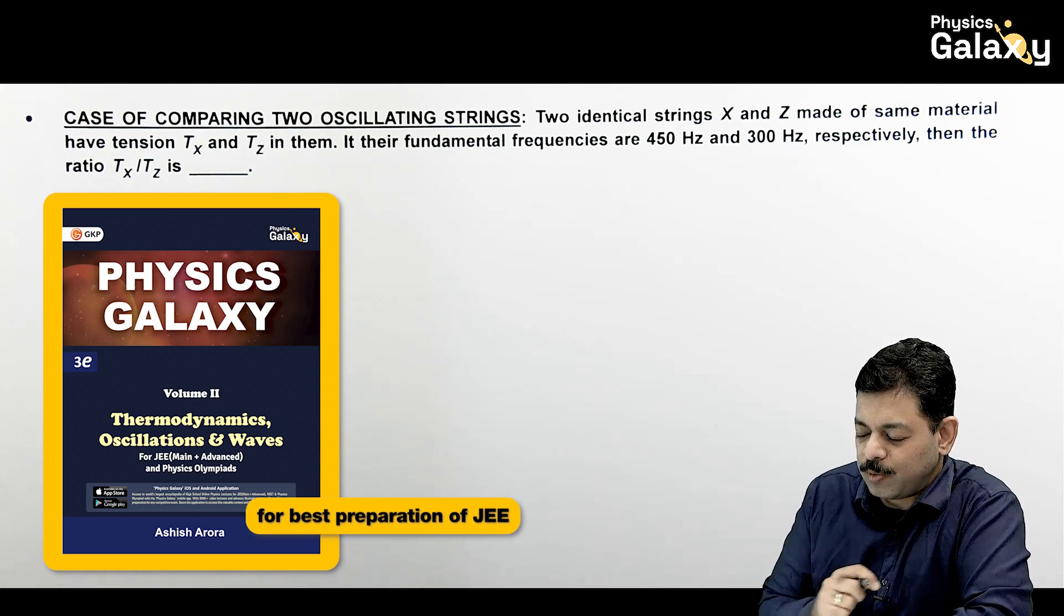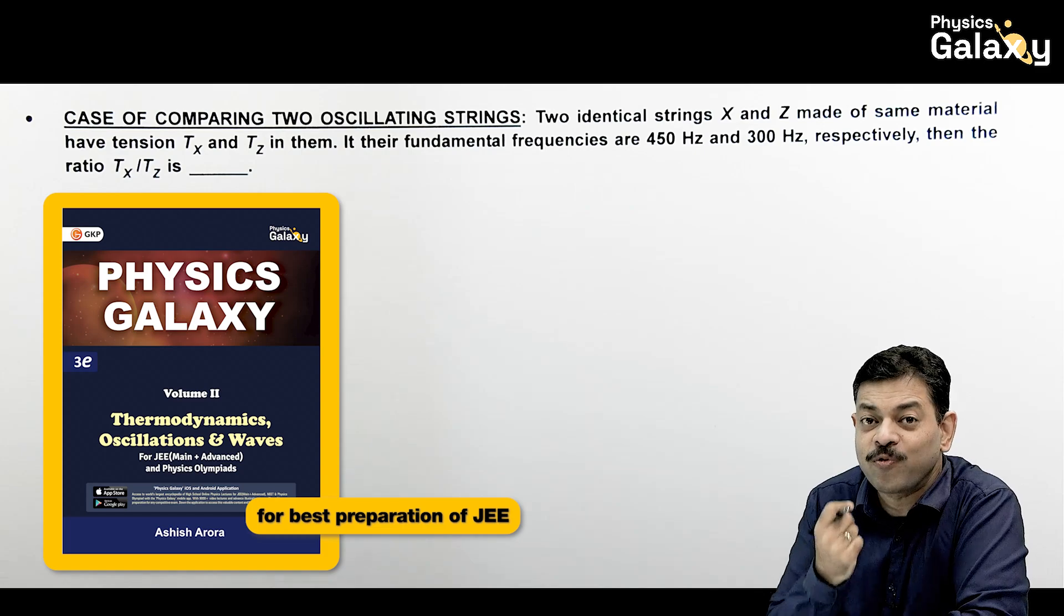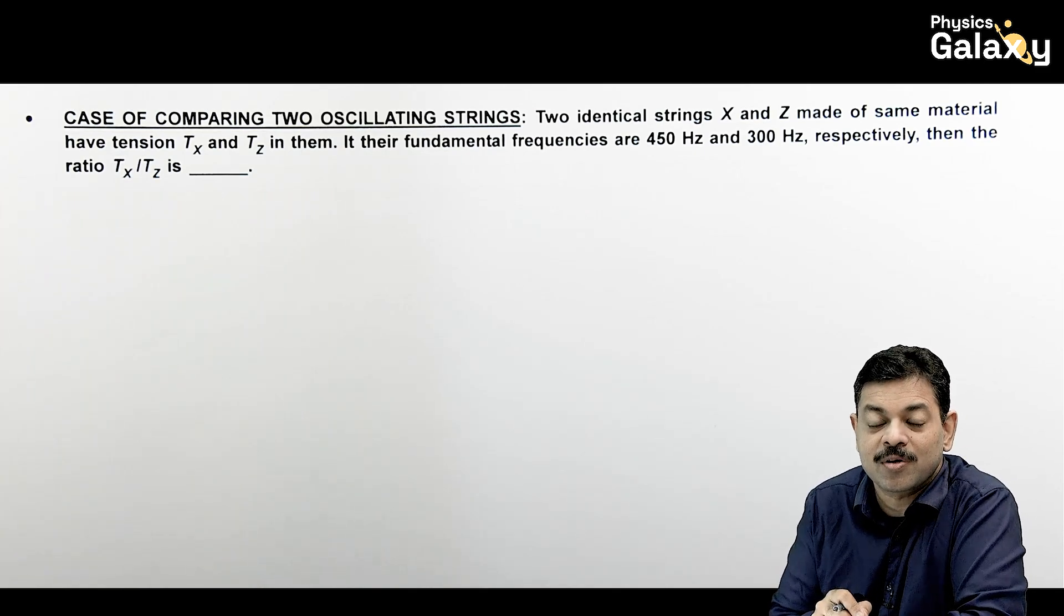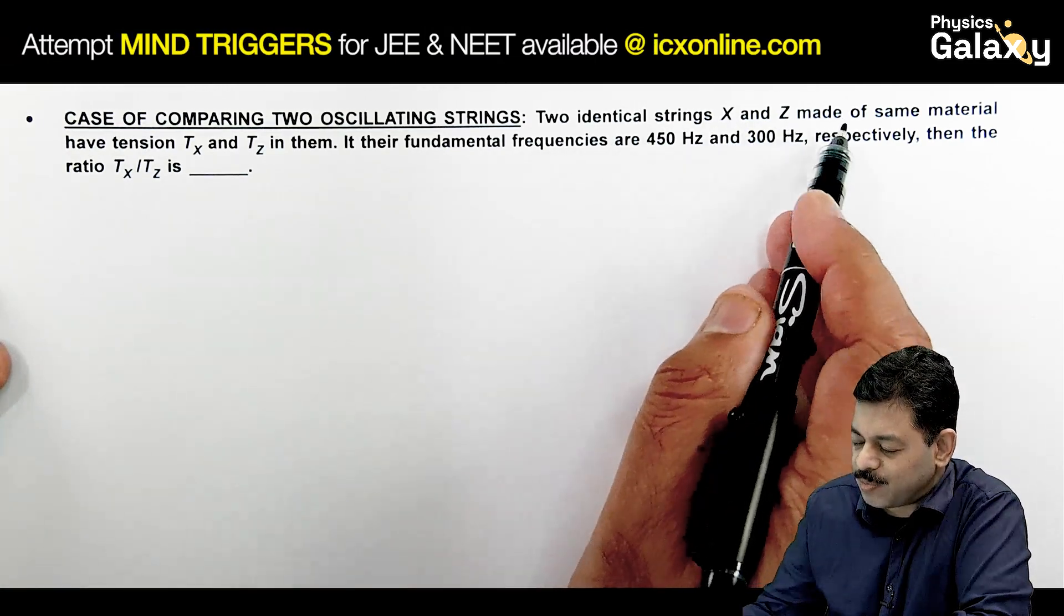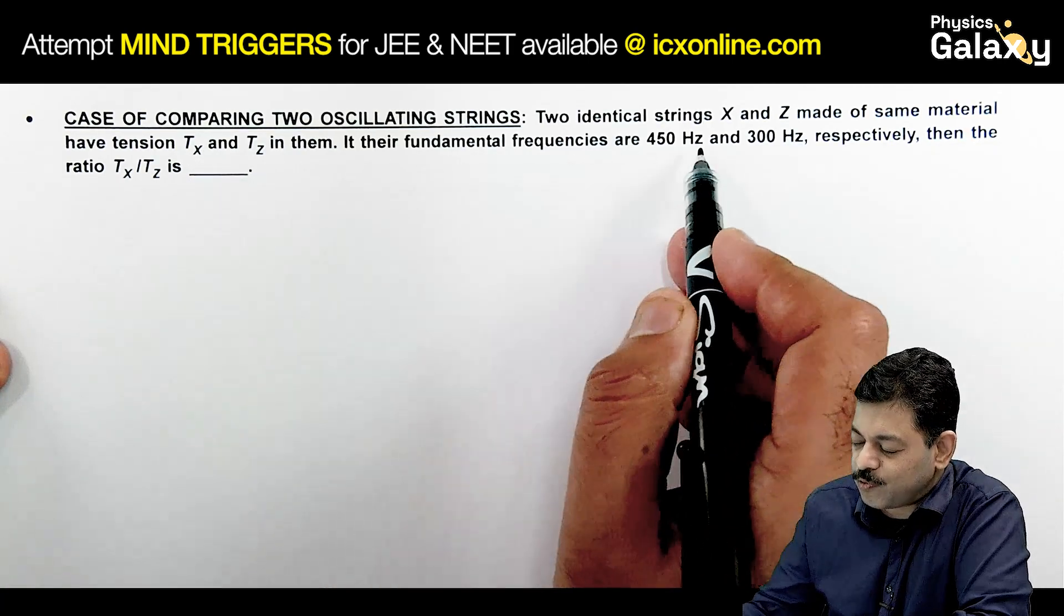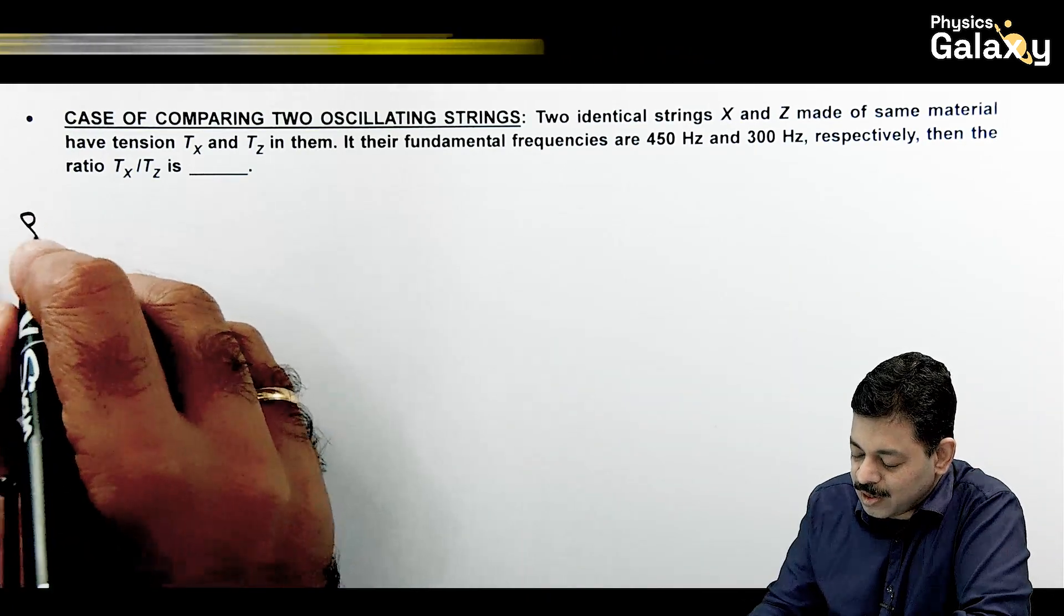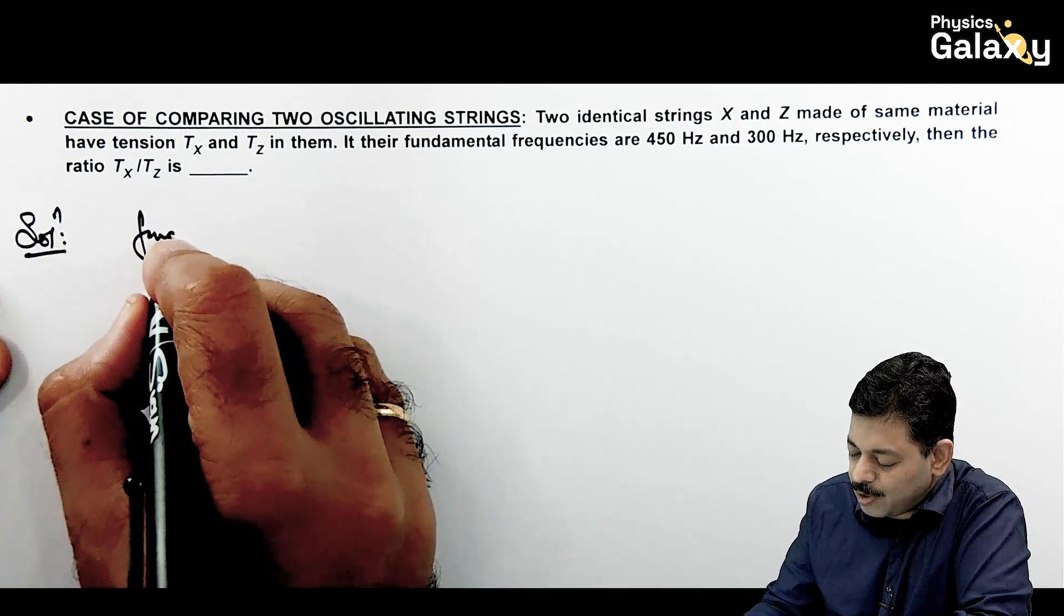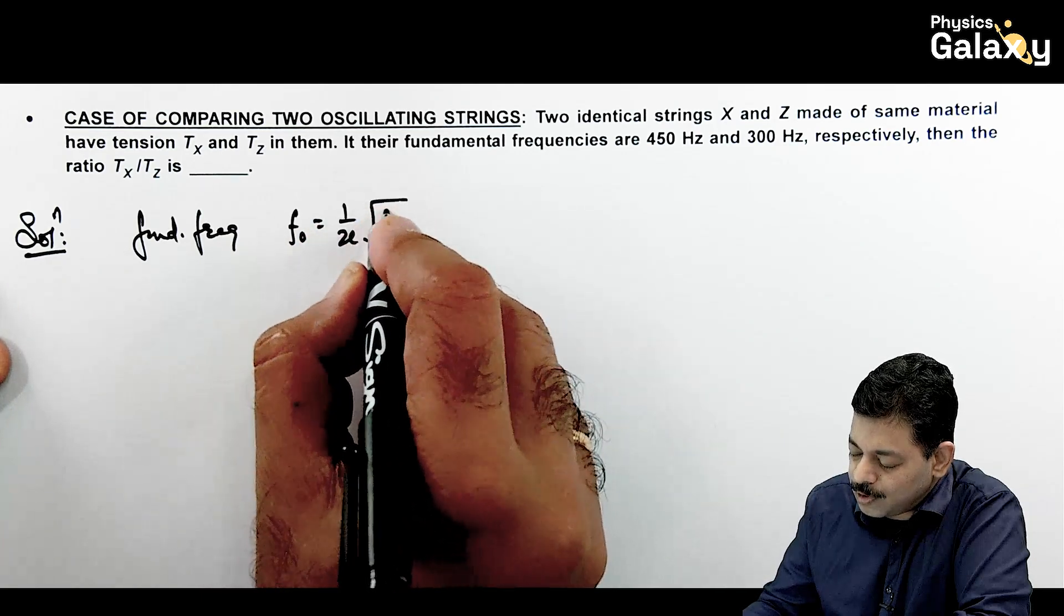Thank you Pooji. Students, we'll be talking about comparing two strings. Jin strings mein oscillation hota hai unke comparison ke liye sirf frequency ka formula use hota hai. Aapne kaafi sare cases bhi dekhe hain. Jitne bhi questions hain, jitne bhi cases hain, aapke base formulaon pe hi sab depend karta hai. Have a look here. It says two identical strings x and z made of same material have tensions Tx and Tz in them. If their fundamental frequencies are 450 hertz and 300 hertz, then the ratio Tx by Tz we need to calculate. So here agar hain directly baat karte hain string oscillations ki, fundamental frequency ko aap directly likh sakti ho f0 is equal to 1 by 2L root of T by mu.